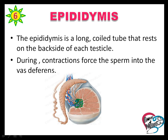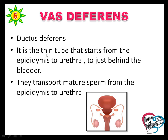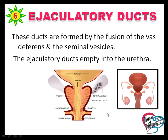The epididymis is a long coiled tube that rests on the backside of each testicle. During contraction, it forces sperm into the vas deferens. The epididymis continues into the vas deferens, which carries sperm away from the testis. Also called the ductus deferens, it is a thin tube that transports mature sperm from the epididymis to the urethra, and is located just behind the bladder.